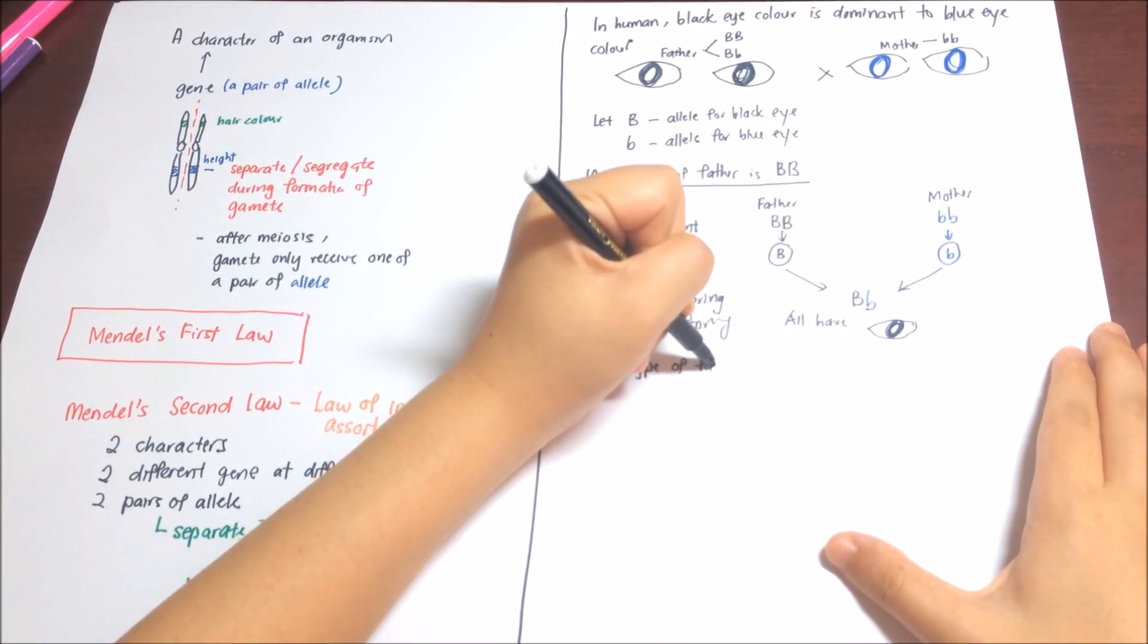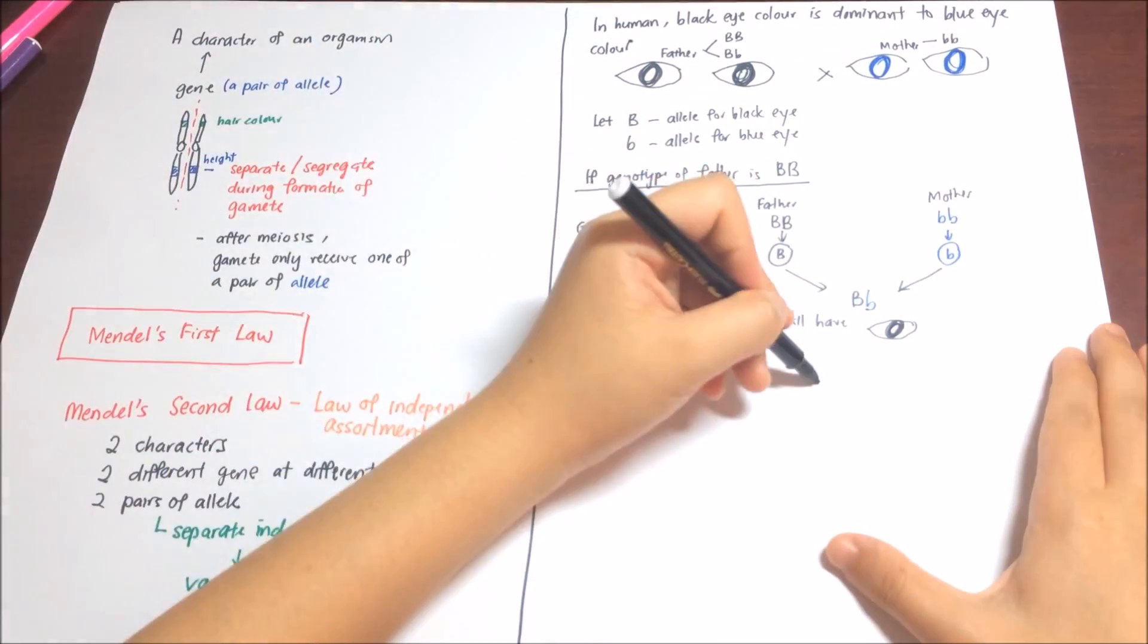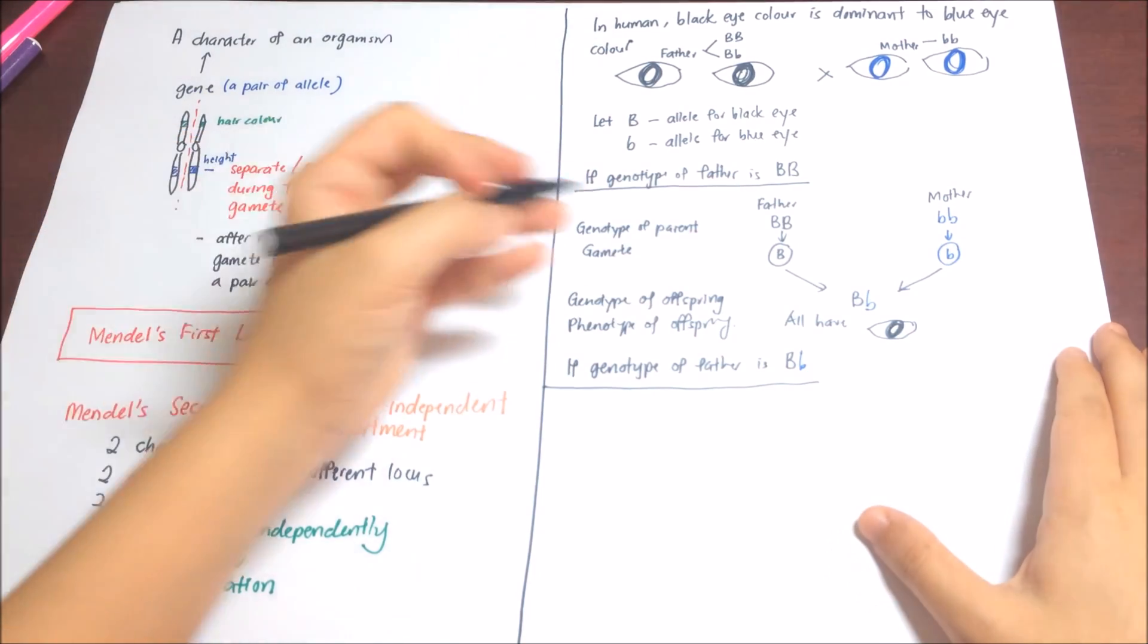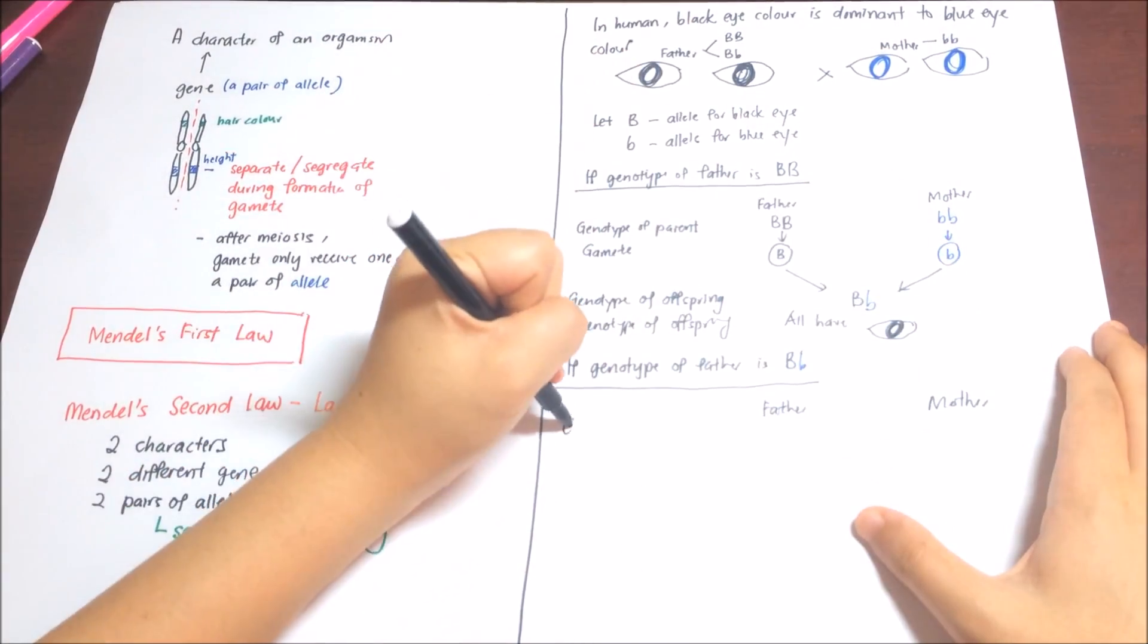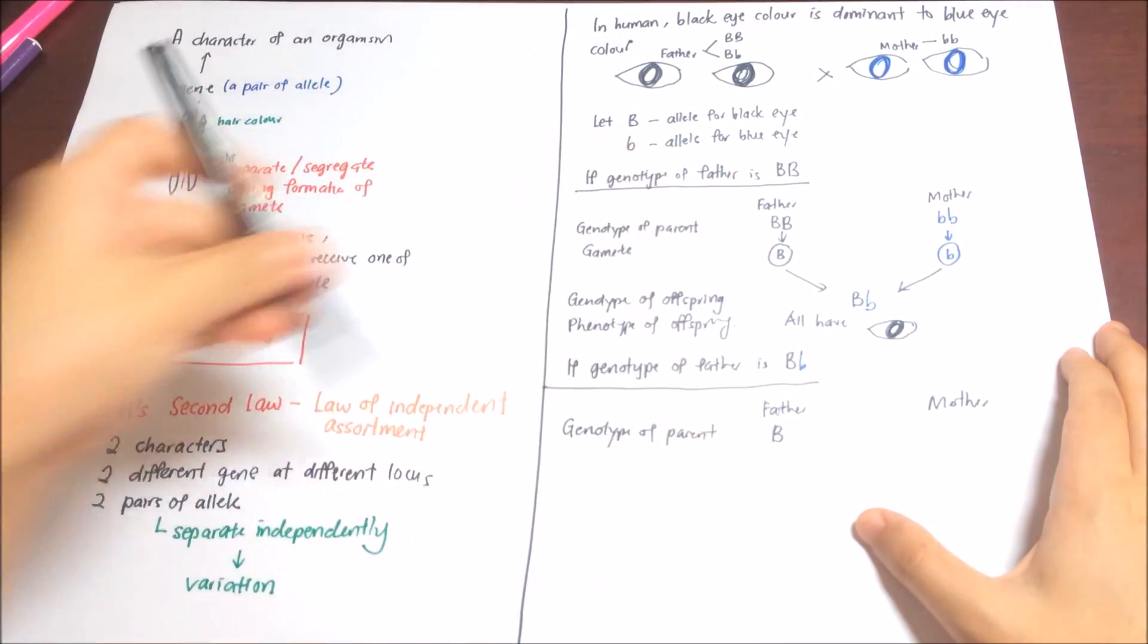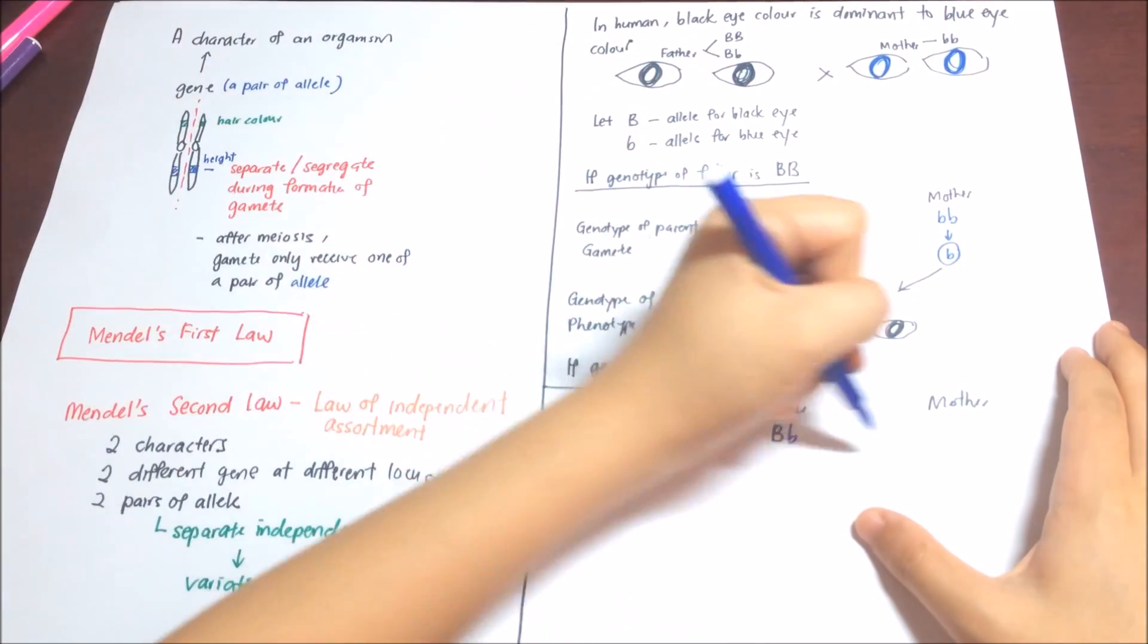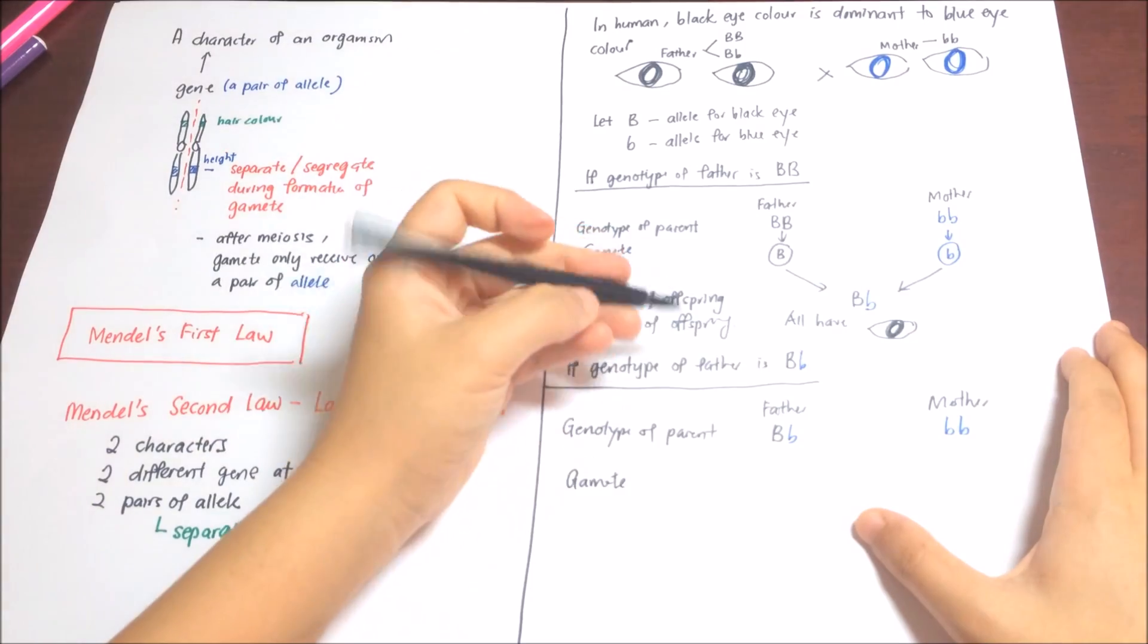Now, the second possibility is that, what if the genotype of father is heterozygous dominant, which means capital B and small letter b. Now, let's work on the possibility. First, you write down the genotype of the parent. Father is capital B and small letter b. Mother is small letter b.